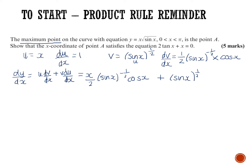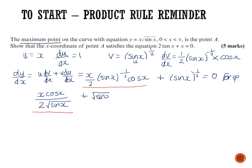Now the question asks about a maximum point. It's a stationary point, so we're solving that derivative equals zero. Let's change the negative and positive half powers into square roots. The first term becomes x cos x divided by 2 root sine x, and the second term is root sine x. Setting this equal to zero.